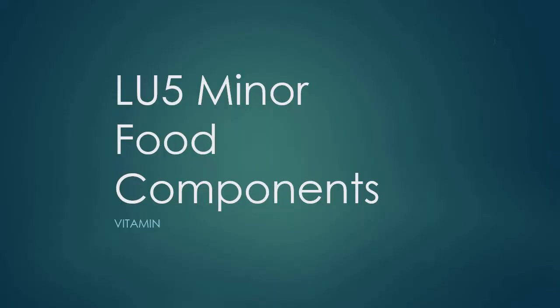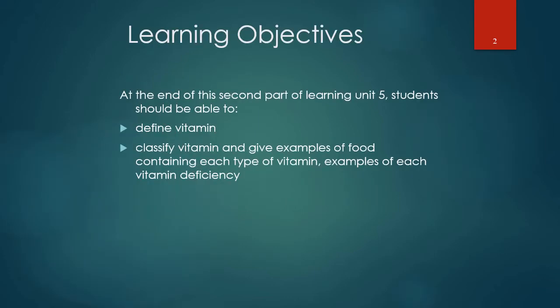Hi all. In this video I'm going to talk about the second part of learning unit 5, which is the minor food components, also known as vitamins. At the end of this part, students should be able to define vitamins, classify vitamins, and give examples of food containing each type of vitamin, as well as examples of each vitamin deficiency.